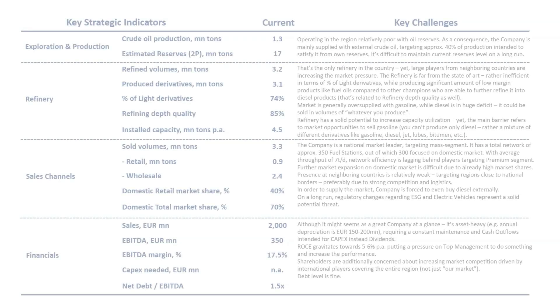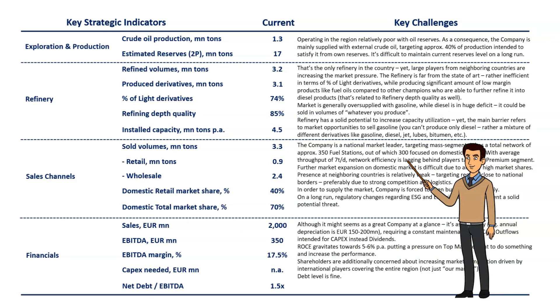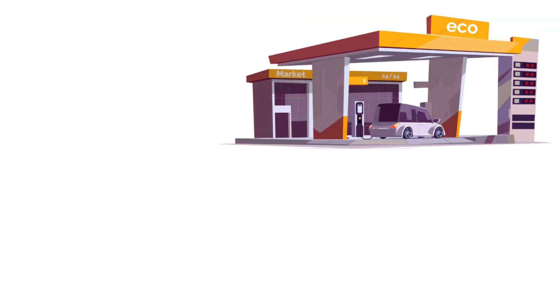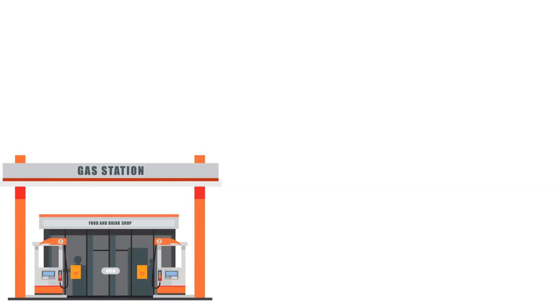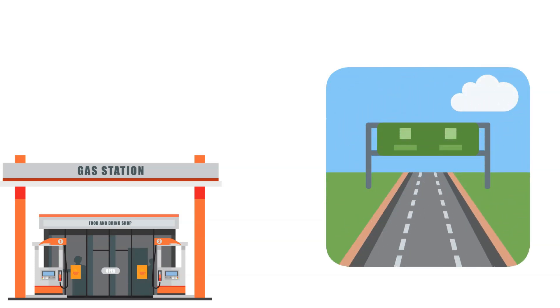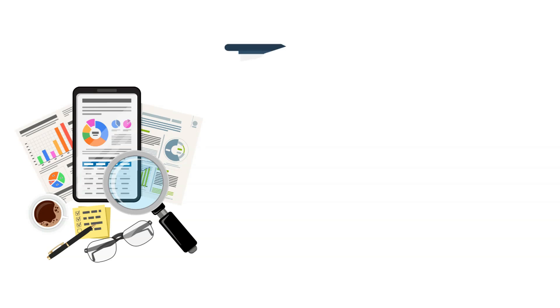Some key challenges regarding sales channels: the company is a national market leader targeting the mass segment. It has a total network of approximately 350 fuel stations, out of which 300 are focused on the domestic market. With an average throughput of 7 tons per day, network efficiency is lagging behind players targeting the premium segment. Key competitors like international fuel station chains are strong especially along international highways and major cities, offering standardized large format stations, premium fuel quality, and a wide range of non-fuel products and services. Their network efficiency is in the range of 15 to 20 tons per day per station, with highly profiled networks of only 30 to 50 stations.